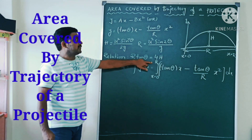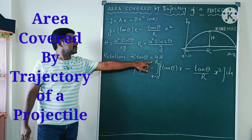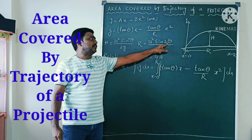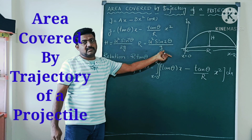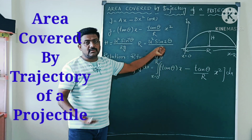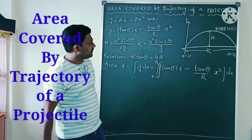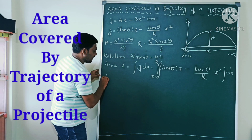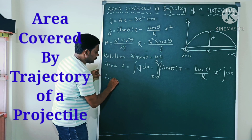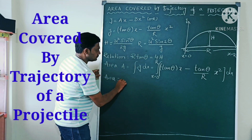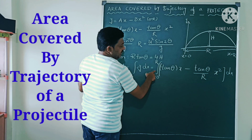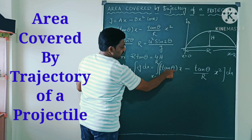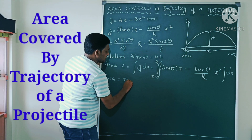Here R is the range; the range equation is u² sin 2θ / g — that was already derived in the previous video. Now for the integration with respect to x, tan θ is a constant.